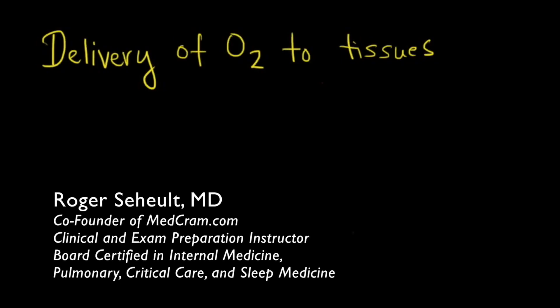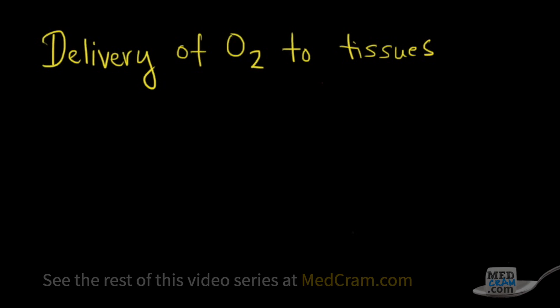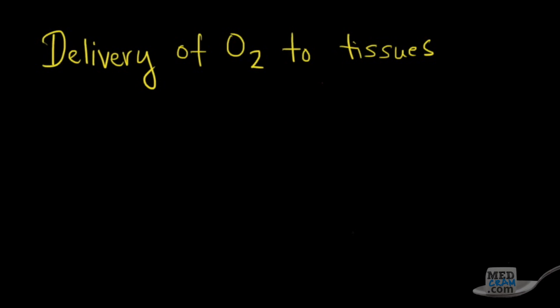Welcome to another MedCram lecture. We're going to talk about delivery of oxygen to the tissues and the pathway that it gets to the tissues through the lung, the bloodstream, and then finally onto the tissues. This is important because it involves a lot of physiology - how oxygen diffuses into the blood and the equations that are used. This is very easily testable because they can use equations to minimize the answers and try to get you to think about these equations. So let's go through this using the major equation.